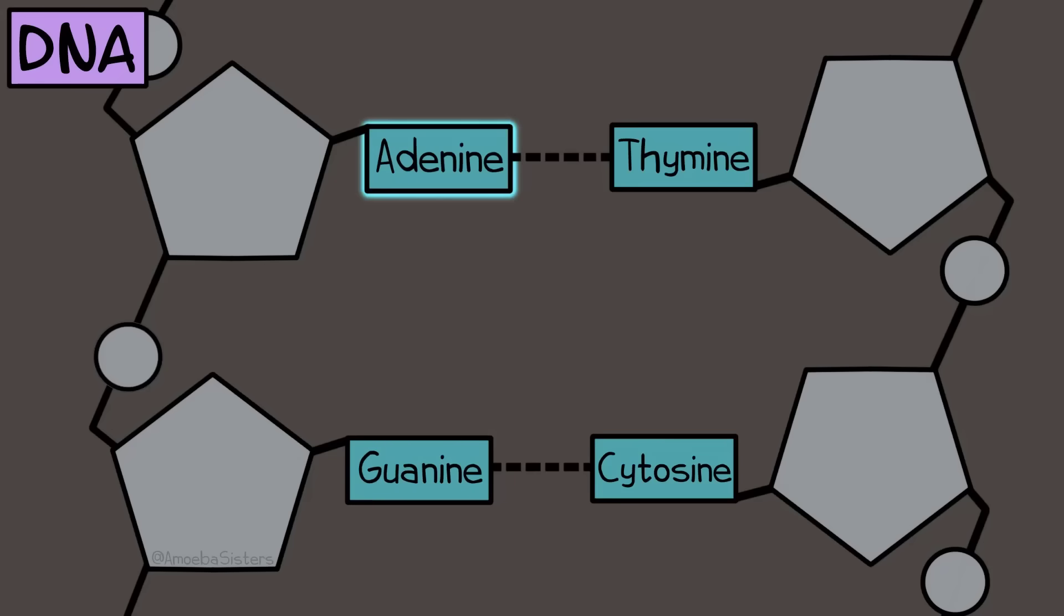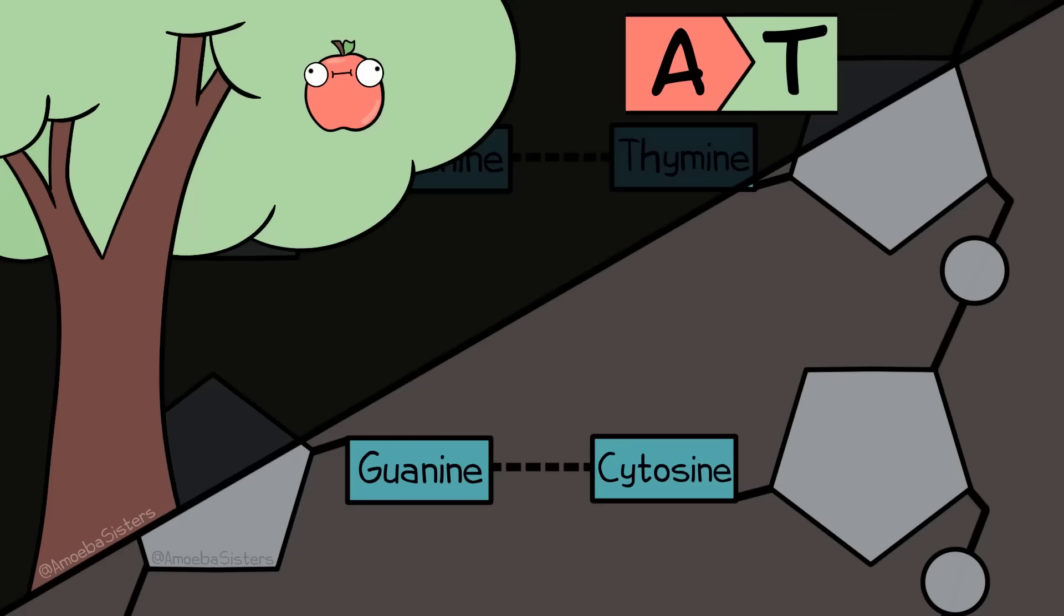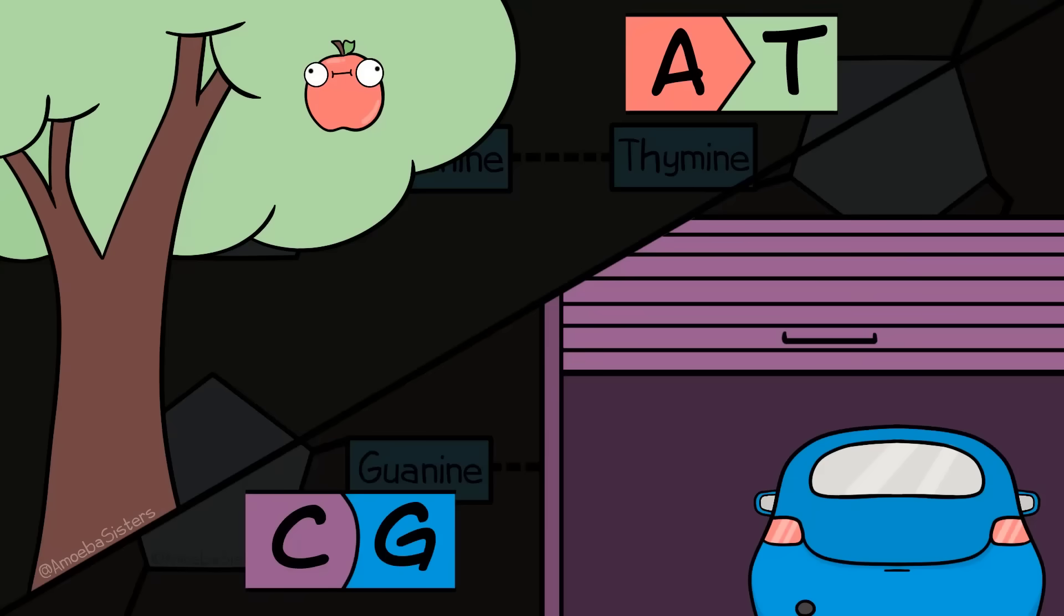The bases in DNA are adenine, thymine, guanine, and cytosine. It helps to remember the popular mnemonic, apples in the tree, that helps you remember that A goes with T, and car in the garage, so C goes with G, to understand how DNA bases pair.